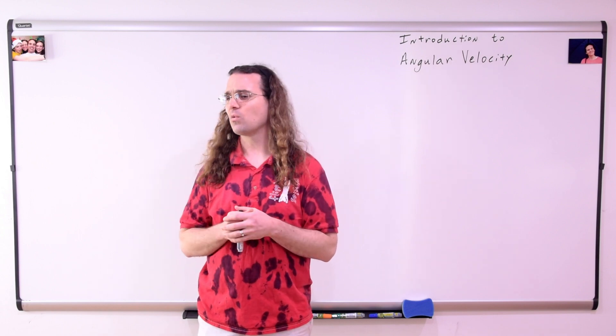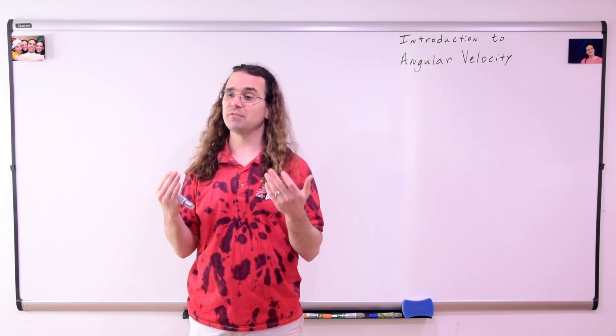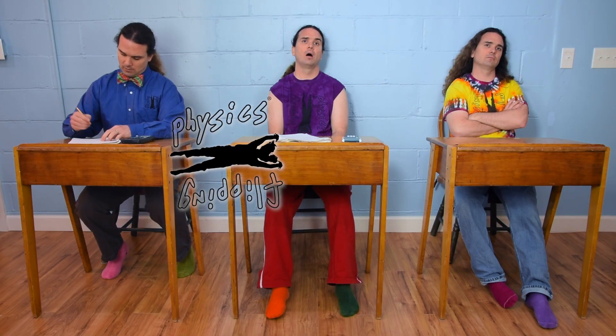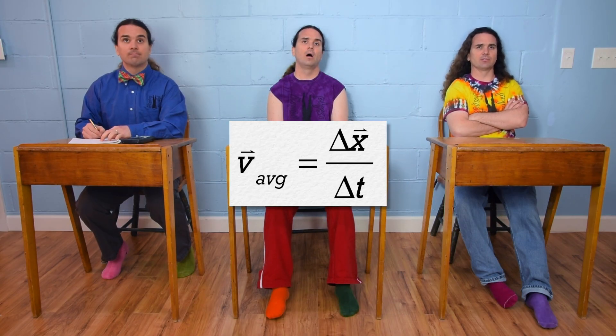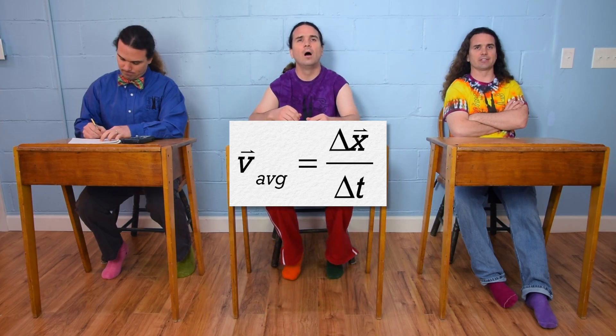Good morning. Bo, what is the equation for average velocity? Flippin' physics! Average velocity equals change in position over change in time.